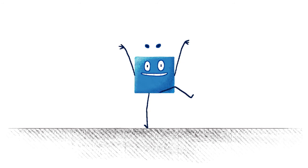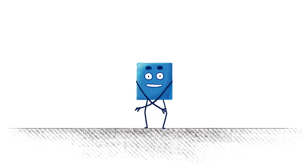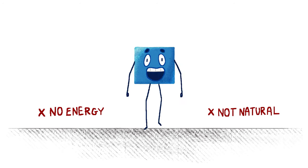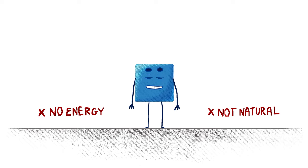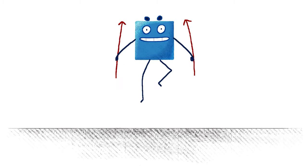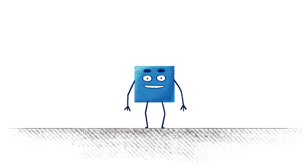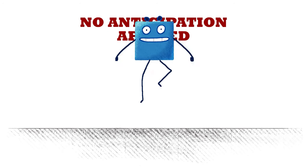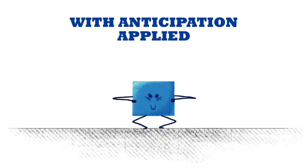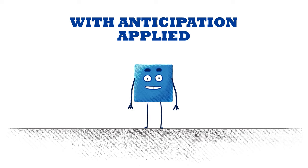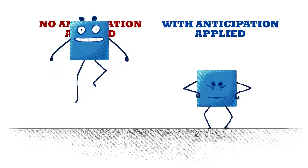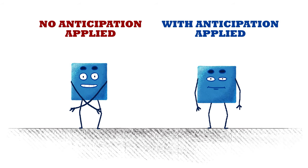Let's take a jumping animation for example. If our subject suddenly launches into the air, it doesn't look terribly realistic. The subject hasn't stored any energy in order to move suddenly upwards. If your subject anticipates the jump by squashing downwards first, then launching into the air, it looks much more realistic. Here's an example with no anticipation. And the same example with anticipation applied. Do you see how the anticipated jump looks much more believable?